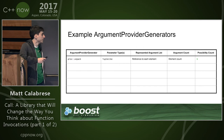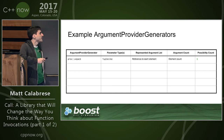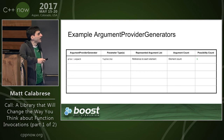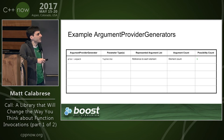An argument provider generator is just a fancy name for an invocable that returns an argument provider — it's essentially a concept alias. The main argument provider generators: prov::unpack takes a tuple-like, represents a reference to each element, has argument count equal to the element count, and possibility count of one. prov::active_alternative_of takes a variant-like, represents a reference to the currently active alternative, has argument count of one, and possibility count of n alternatives.